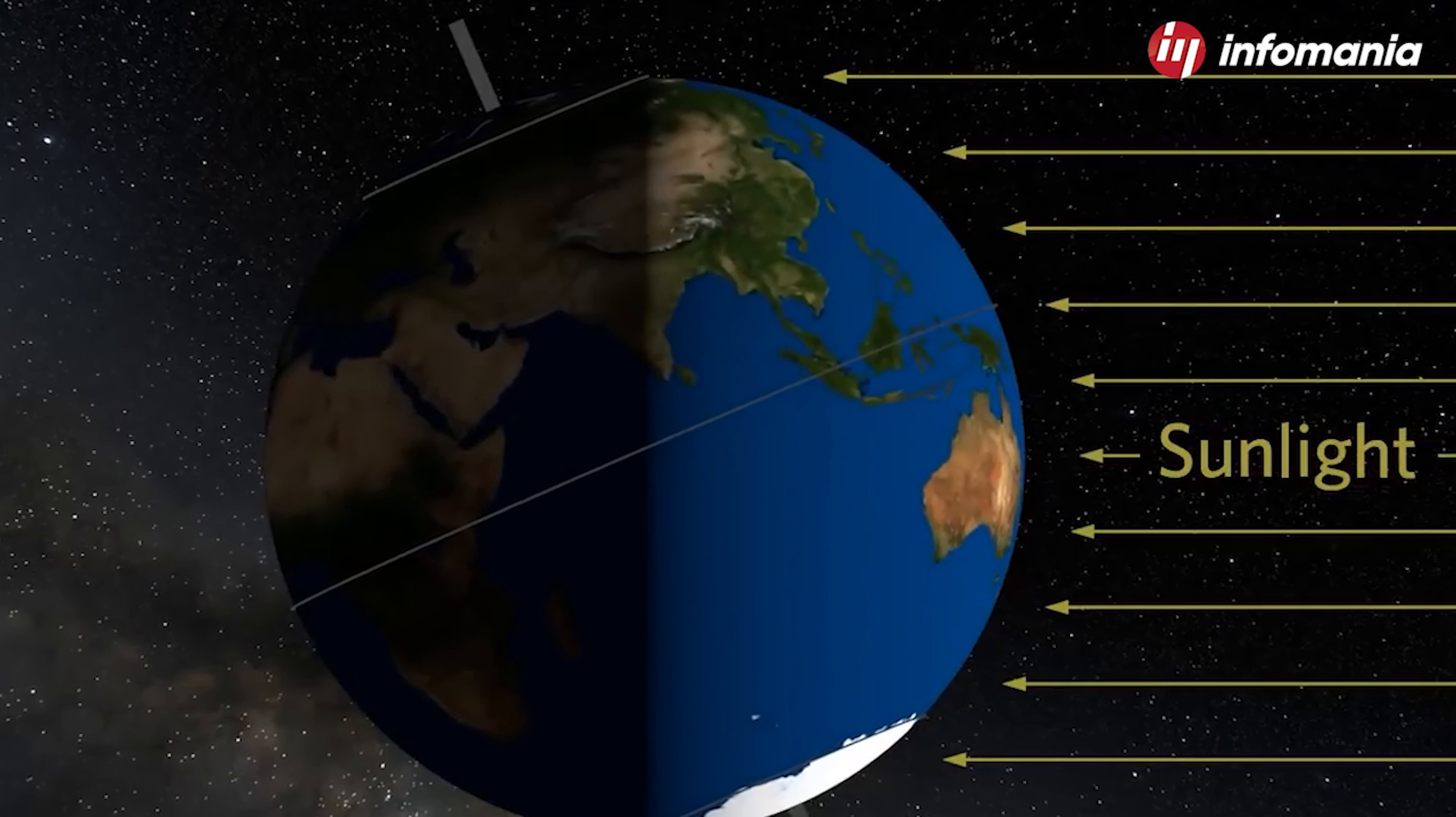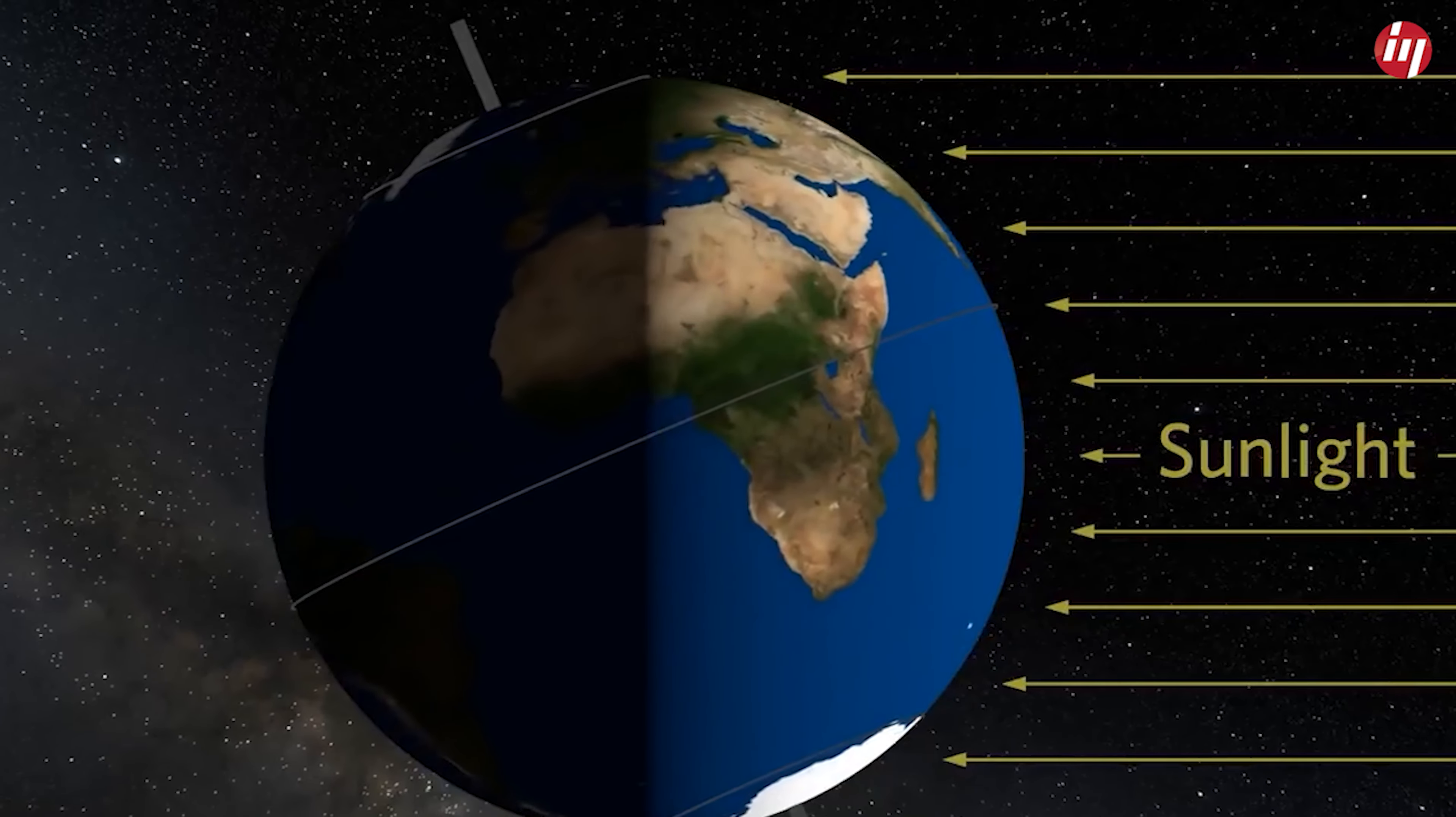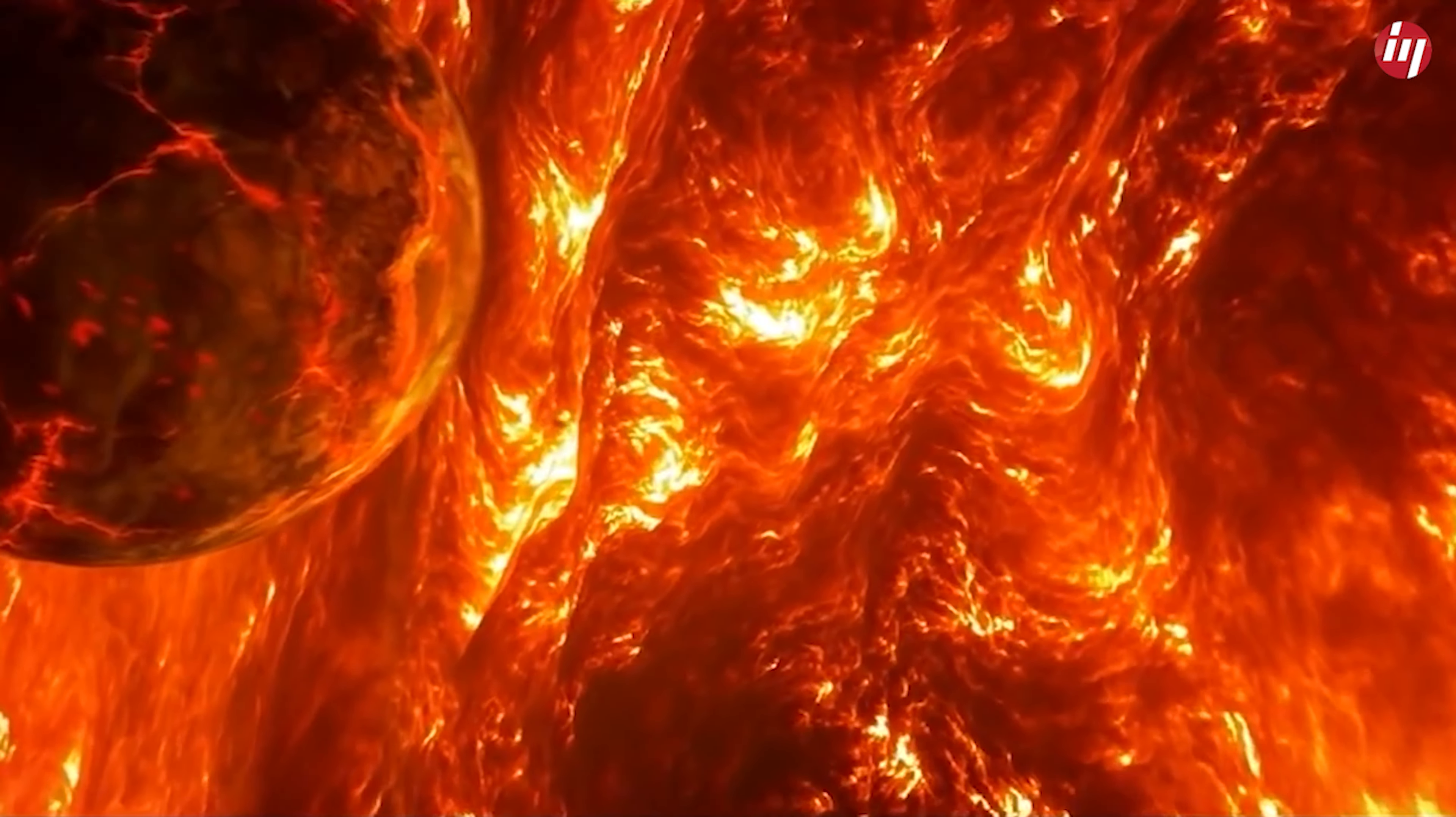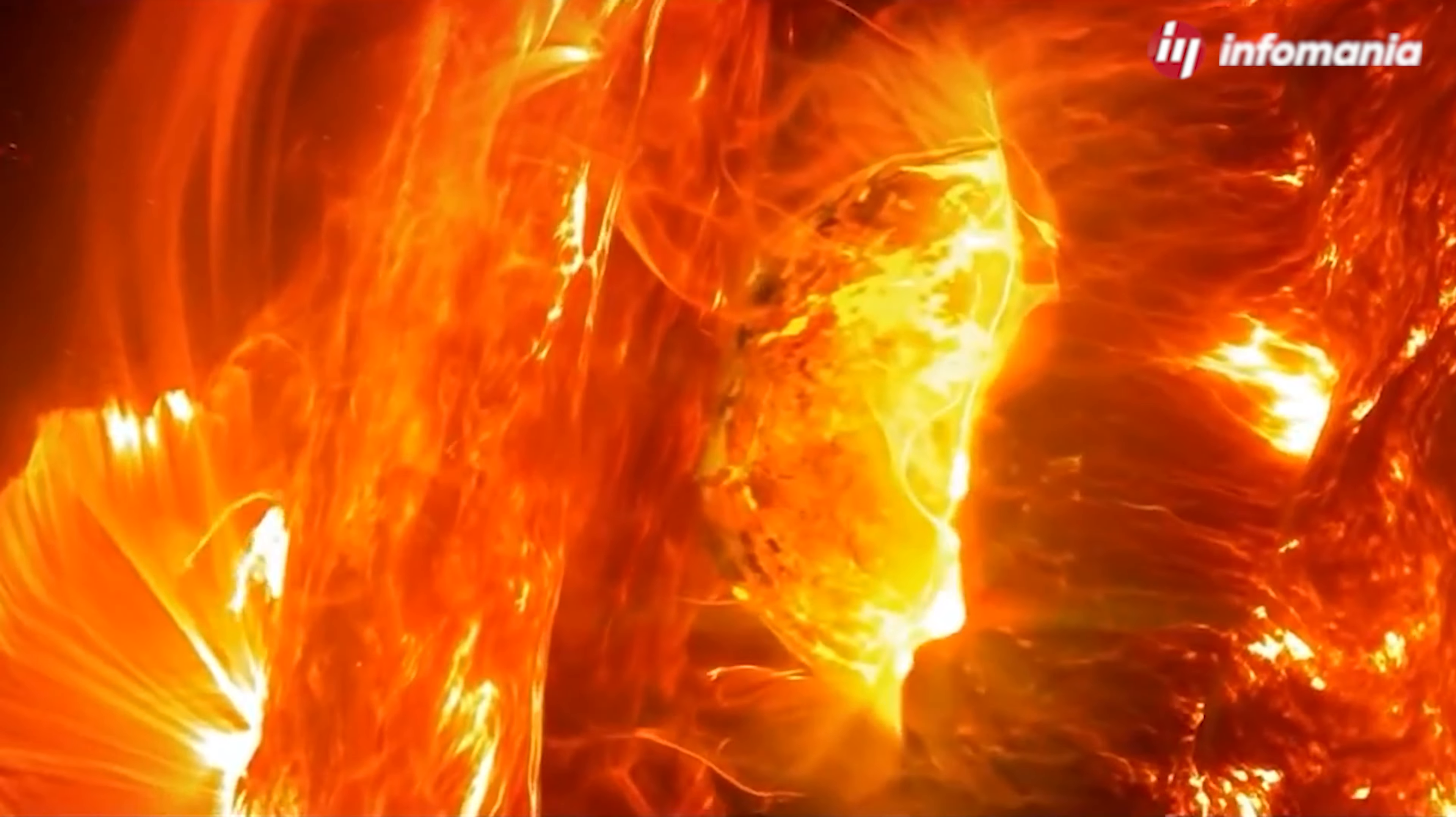Half of the planet would almost continuously face the heat of the sun, while half would face the cold of space, and there is a high chance that the sun swallows the earth. Scary, but that is just the beginning.